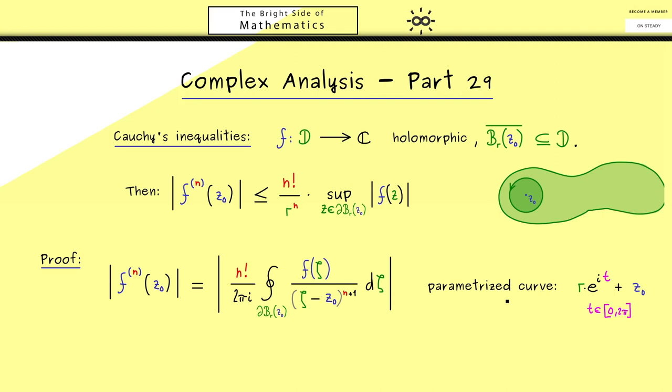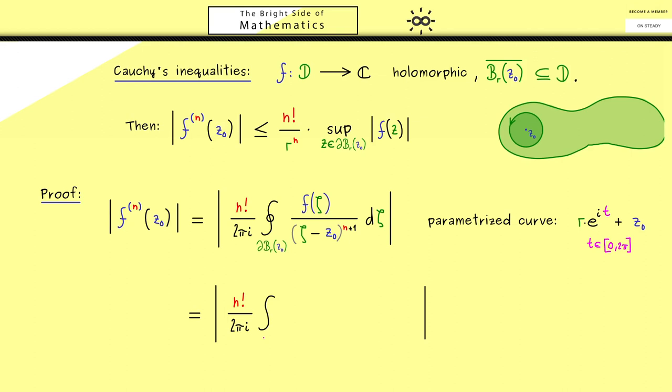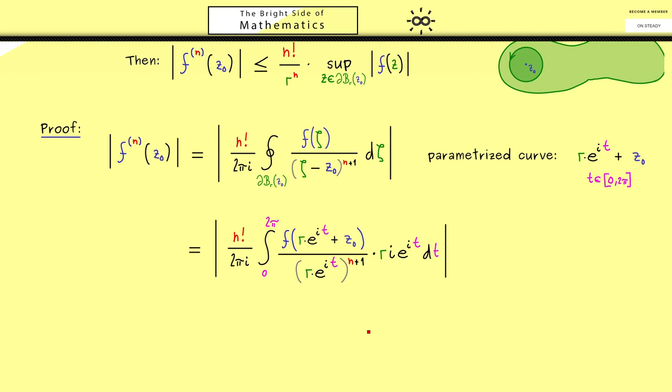So now this parameterized curve we can use to reformulate this contour integral. So more precisely it means now we have the integral from 0 to 2π of f at the values of the curve divided by the value of the curve minus z_0 to the power n+1. So you see z_0 cancels so what remains is r*e^(it) to the power n+1. And then the whole thing times the derivative of the curve, which is r*i*e^(it) dt. So there we have it. This is what we get when we want to calculate this contour integral. So the first thing you should see is that we can cancel this r and this e^(it). Moreover also this i in front will cancel.